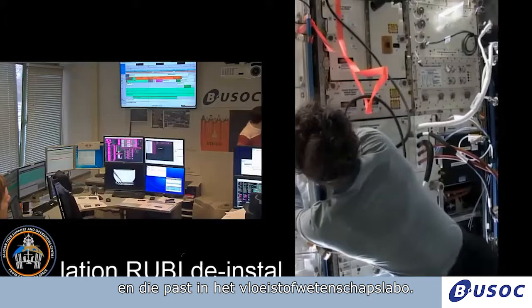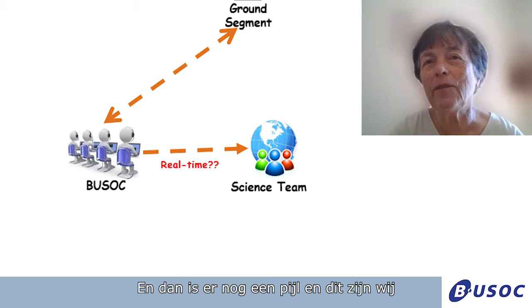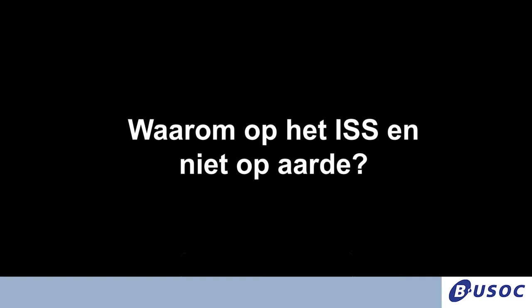The results go to the USOC, the Belgium center where the data are received, and we also control the experiment — how to change the cell, rotate the carousel. And then there is another arrow, and this is us, the science team. We get all this data and we have to analyze them.